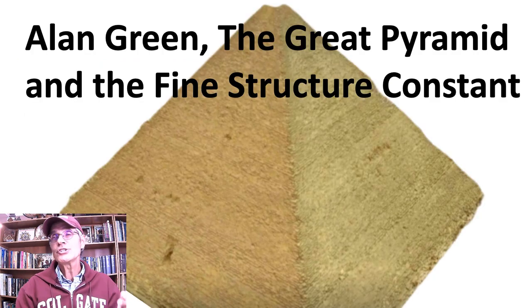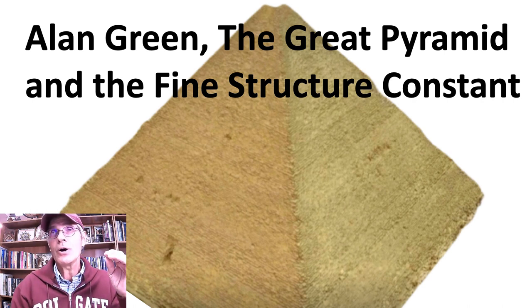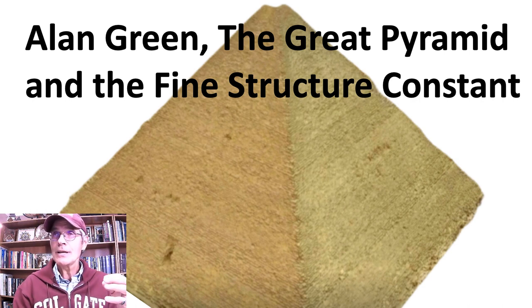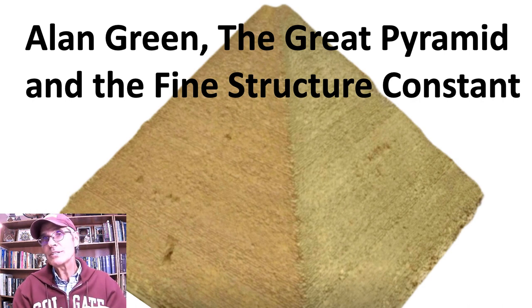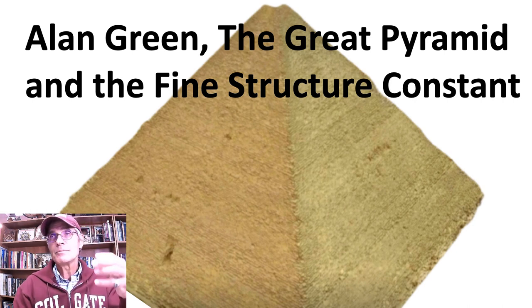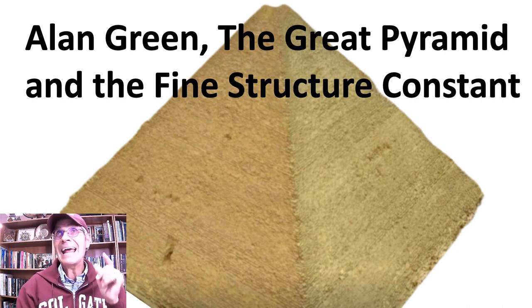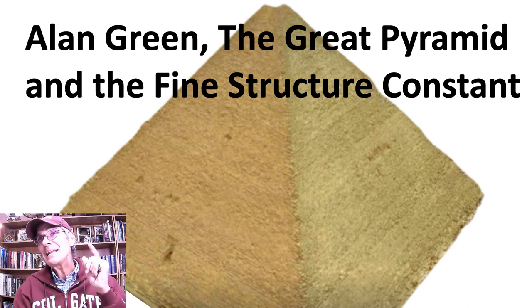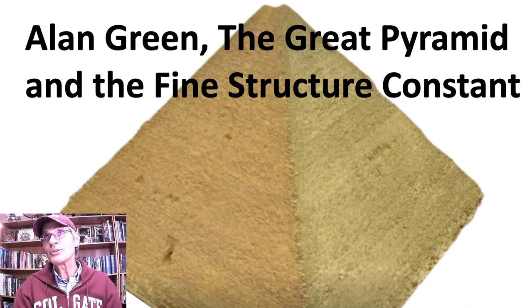Alan Green has shown that all the major constants are embedded in the Great Pyramid: Brun's constant, Euler-Mascheroni, the Euler constant, square root of three, square root of five, pi, and the enigmatic fine structure constant. Let's listen to Alan.